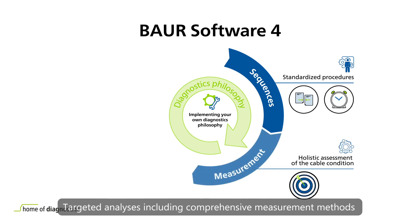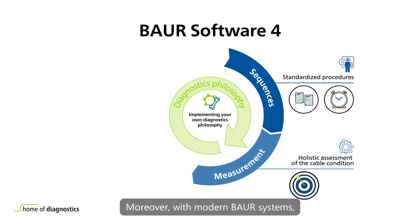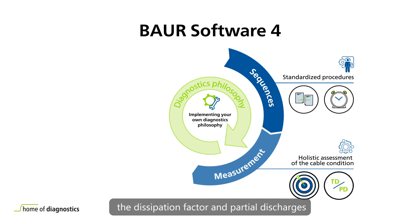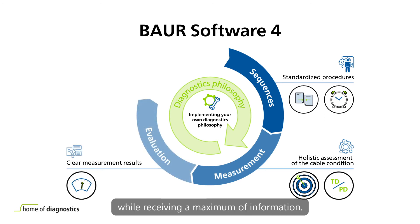Targeted analyses, including comprehensive measurement methods, are carried out for a holistic assessment of the cable condition. Moreover, with modern Baur systems, the dissipation factor and partial discharges can be measured simultaneously with no extra effort. This makes condition assessments much shorter while receiving a maximum of information.